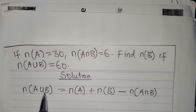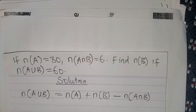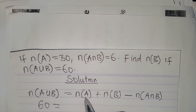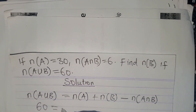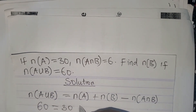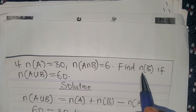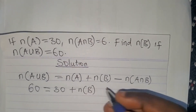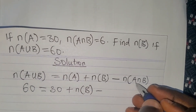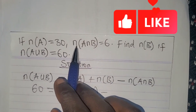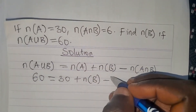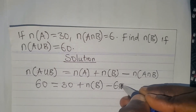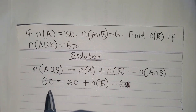The number of elements in A union B equals 60. Equals the number of elements in A, that is 30, plus the number of elements in B — that is what we want to find — minus the number of elements in A intersect B, that is 6.